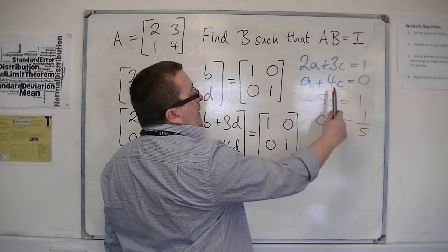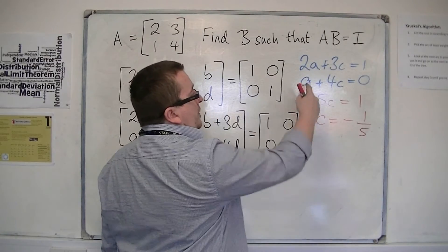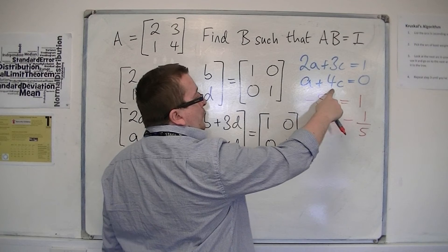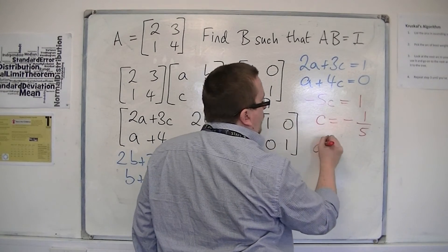If I put c back into the equation, if I choose this second equation, then that means I've got a minus 4/5 is equal to 0, so a must be 4/5.